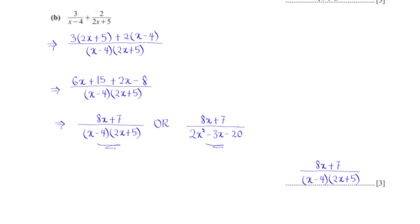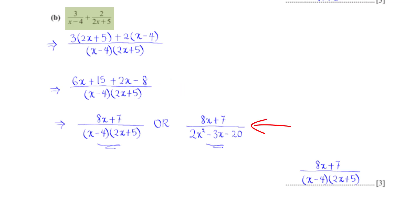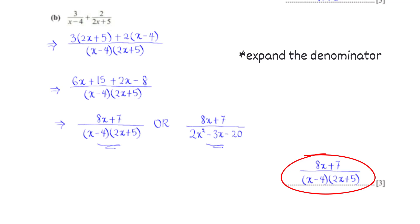Write as a single fraction in its simplest form: 3 over (x minus 4) plus 2 over (2x plus 5). The LCM is (x minus 4)(2x plus 5). This gives [3(2x plus 5) plus 2(x minus 4)] over (x minus 4)(2x plus 5), which simplifies to (6x plus 15 plus 2x minus 8), giving (8x plus 7) over (x minus 4)(2x plus 5), or equivalently over (2x squared minus 3x minus 20).